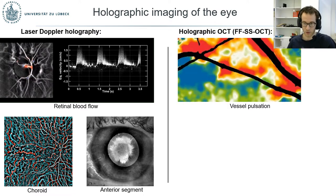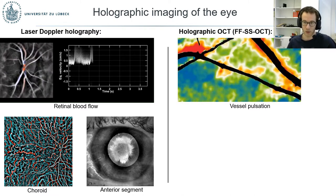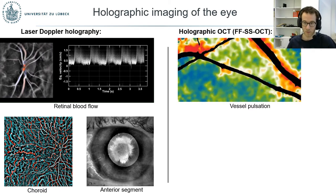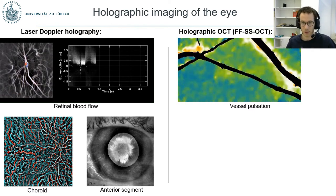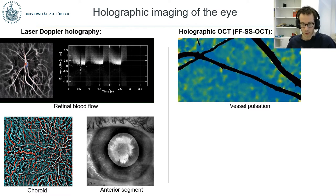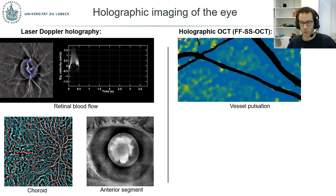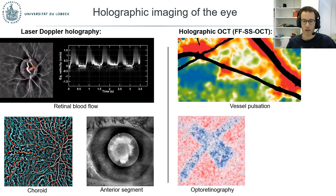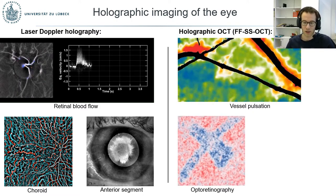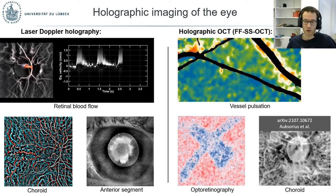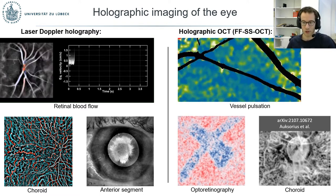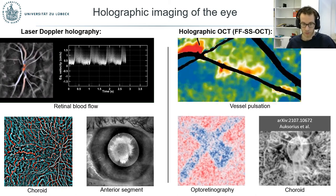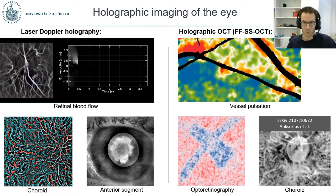On the other hand, holographic OCT — the other name for full-field swept-source OCT — allows very fast OCT imaging of the retina. From the phase fluctuations of these OCT volumes, it's possible to detect any kind of micro-movement in the retina, including vessel pulsation and the neural response of the retina to a light stimulus. It has also been shown that when manipulating the spatiotemporal coherence of the light source, it's possible to largely increase the quality of choroidal images by reducing multiply scattered light.